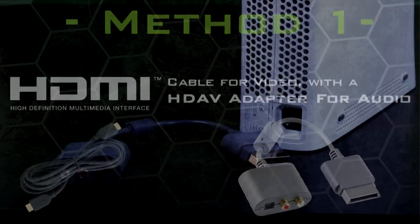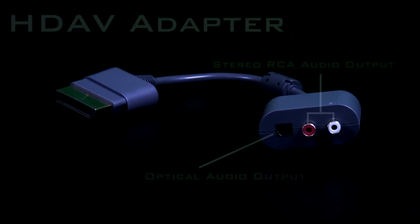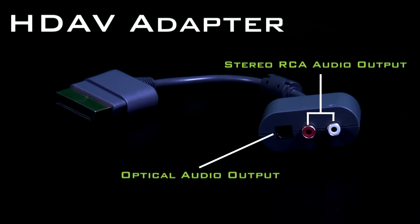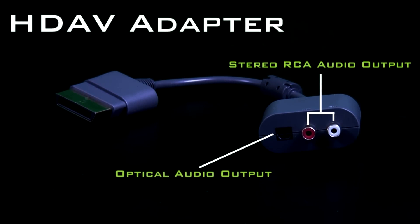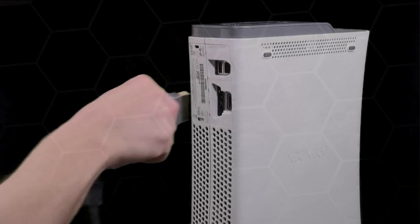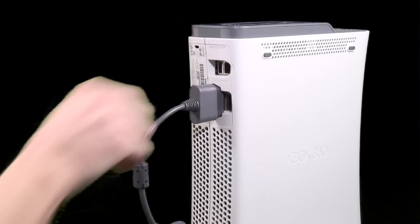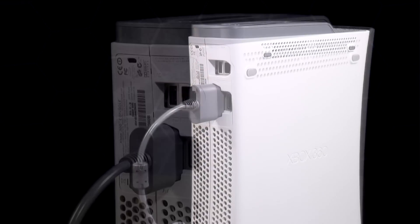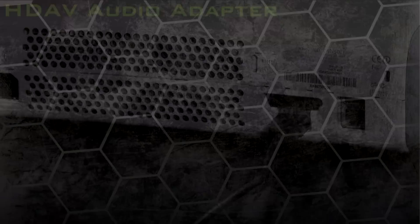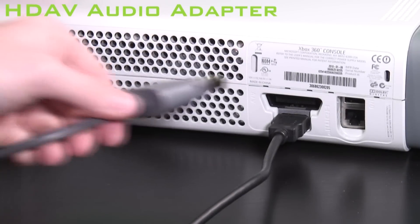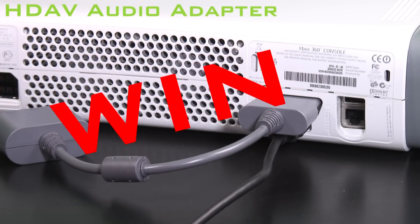The first method is to use a HD AV adapter. This adapter gives your Xbox stereo RCA audio output as well as an optical audio output. Take your HD AV adapter and plug it into the AV port of the Xbox, which is adjacent to the HDMI cable. Note that the HD AV cable is slim enough to fit side by side with the HDMI cable.